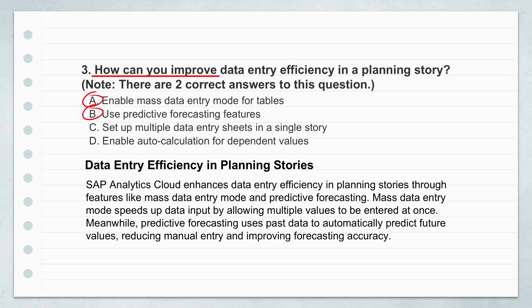Let's break down A, enable mass data entry mode for tables. Think about times when you have to update a bunch of data points all at once — maybe you're adjusting budgets across different departments or putting in sales forecasts for tons of products. Mass data entry mode lets you type those values right into multiple cells in a table all at the same time; you don't have to do them one by one. It saves a ton of time and effort, especially with large data sets that need updates constantly.